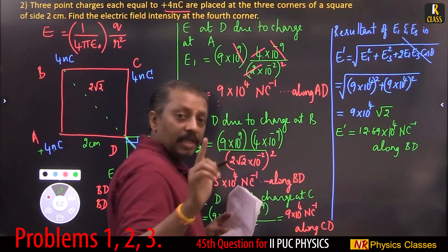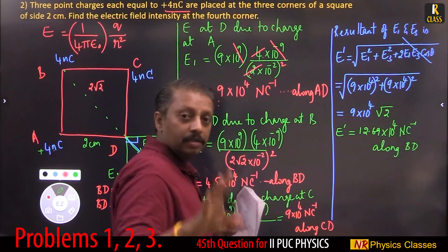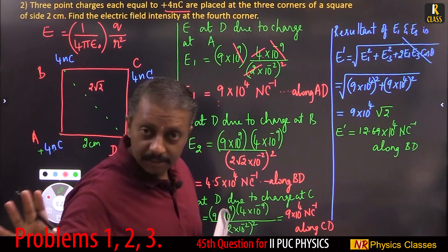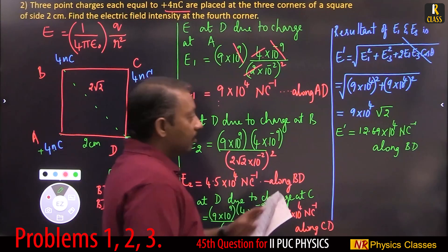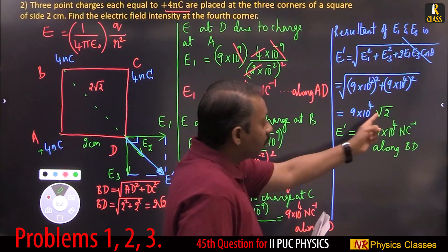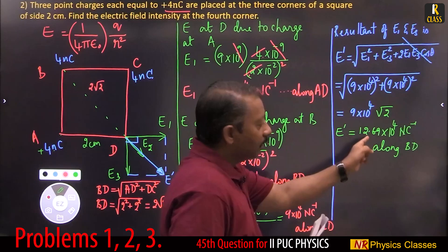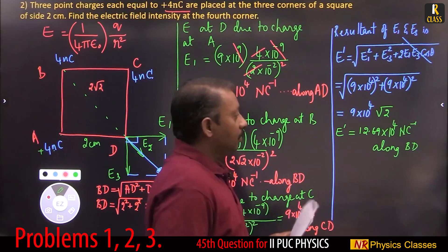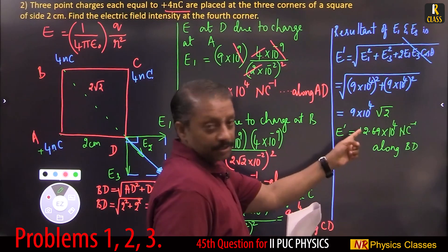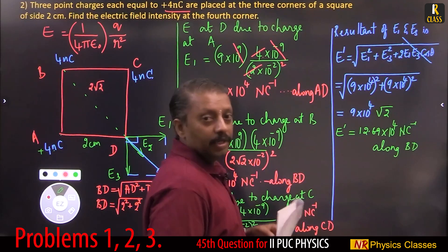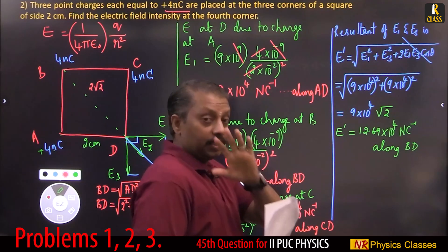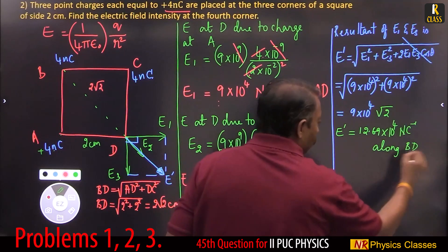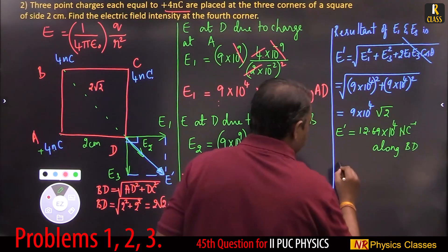Students, please take the calculator you carry to your examination centre and use it. Type 9 × 1.41 and verify the answer. Make sure you calculate it yourself — that gives you confidence. The direction of E' is along BD.